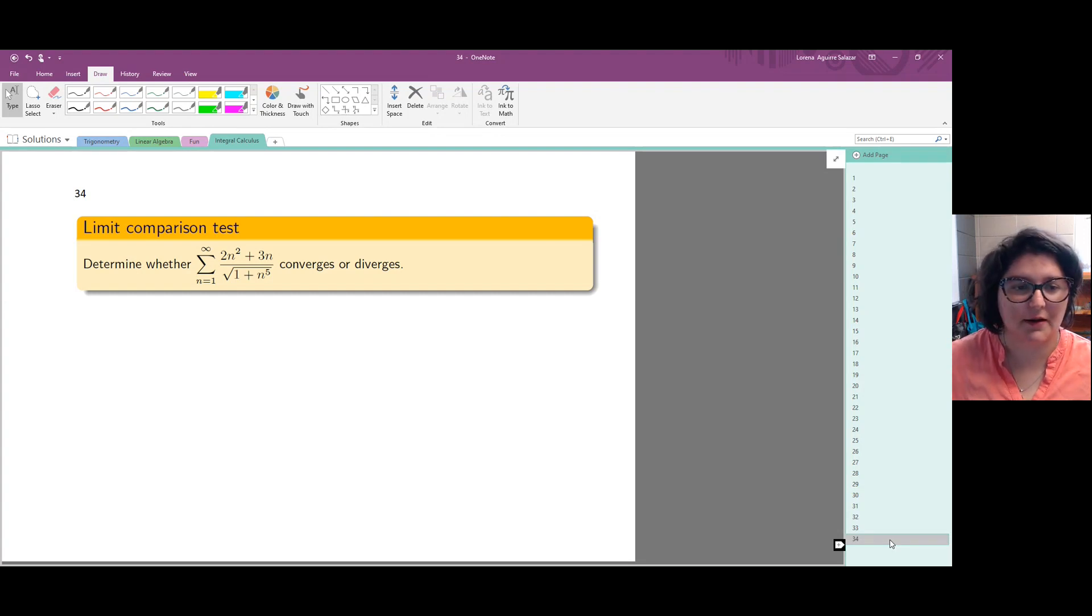The series that we have at hand is the summation from 1 to infinity of 2n squared plus 3n divided by the square root of 1 plus n to the 5.